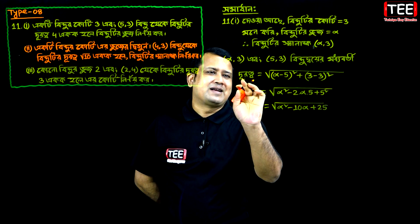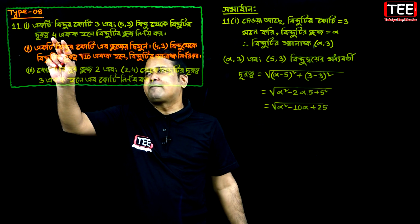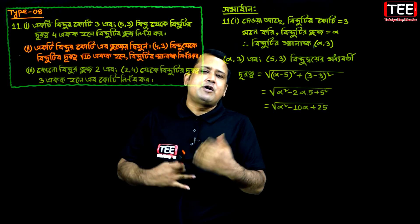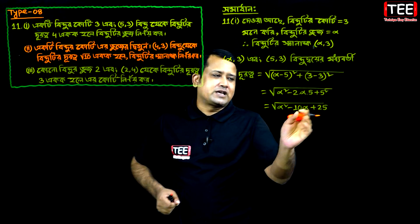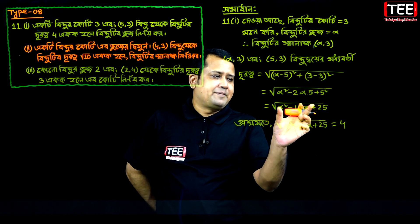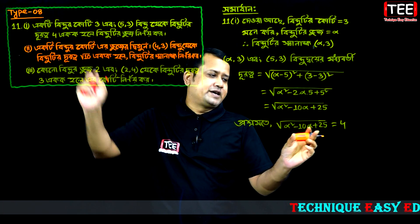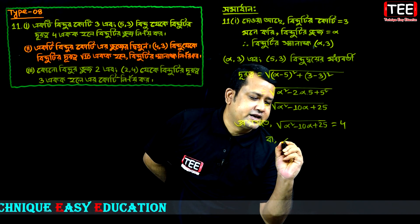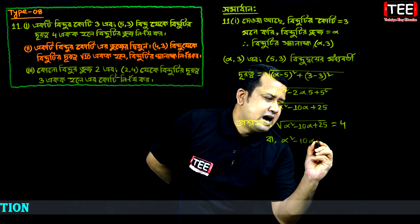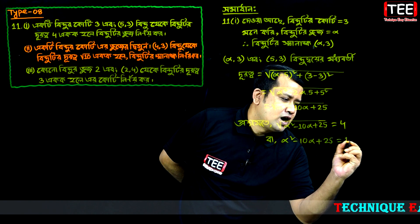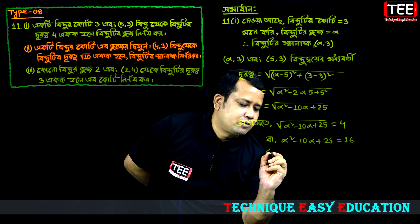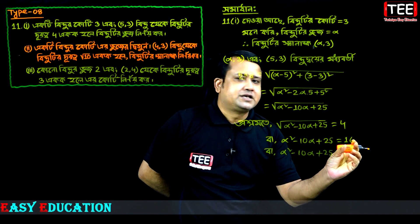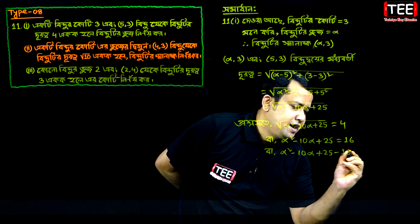Minus 25. We will see that the root of alpha square is equal to alpha square minus 10 alpha plus 25. We will see that the root of alpha square minus 10 alpha plus 25 is equal to 0.